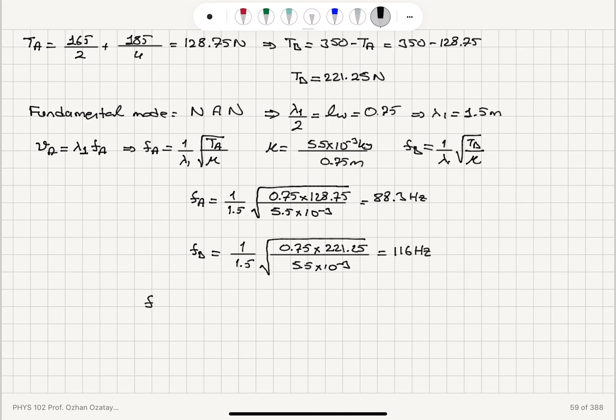So the beat frequency when they are plucked together is absolute value of delta F, which is 116 minus 88.3. We find a beat frequency of 27.7 hertz.